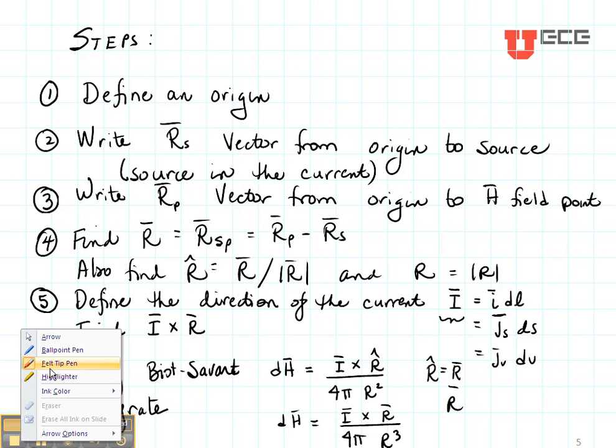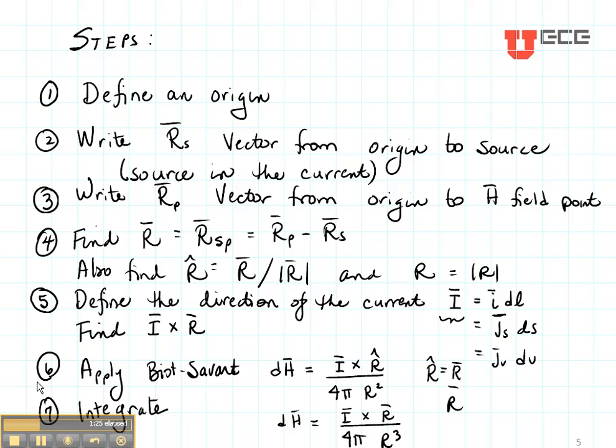After we have found I cross R, we then are going to apply the Biot-Savart Law. The Biot-Savart Law that you see here has this current, one of these three things, crossed with the unit vector divided by 4π and the magnitude squared.